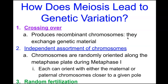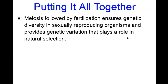Lastly, random fertilization means that any sperm can ultimately fertilize the ovum. In closing, meiosis followed by fertilization ensures genetic diversity in sexually reproducing organisms and provides genetic variation that plays a role in natural selection.